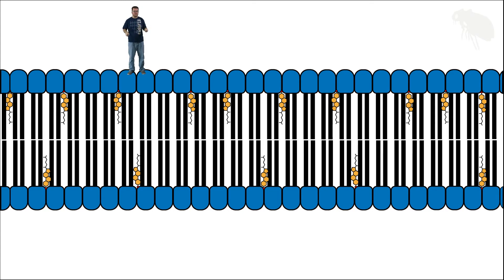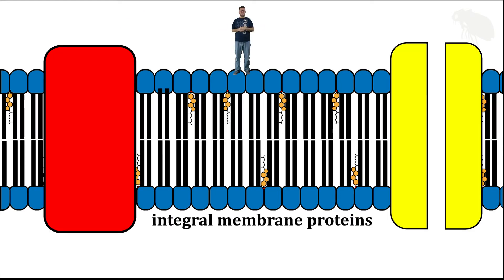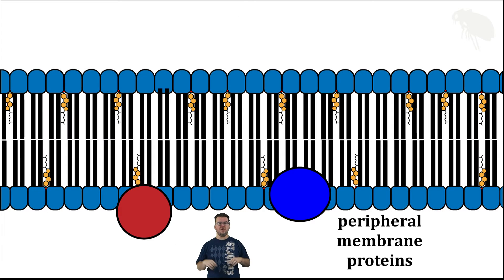But it's not just steroids embedded in this membrane. There are some other things there as well. Things like these two integral membrane proteins, proteins that pass from one side of the membrane all the way through to the other. We have here a pair of peripheral membrane proteins, proteins that essentially float on one side of the membrane. Now I'm showing them both on the interior of the cell's membrane, but they could actually be on the exterior as well.